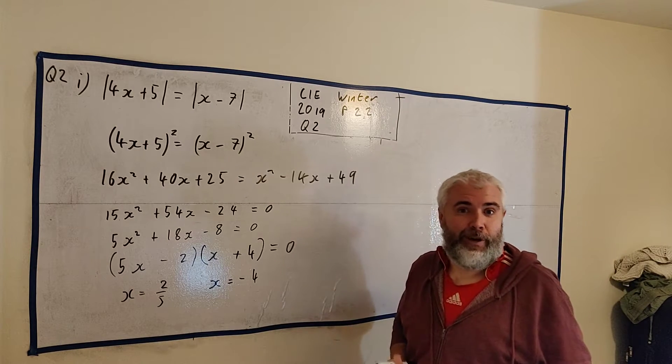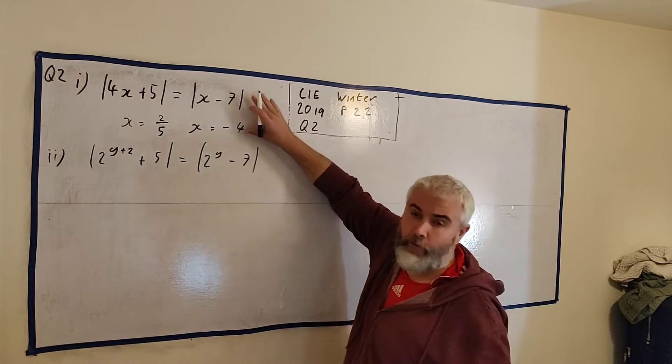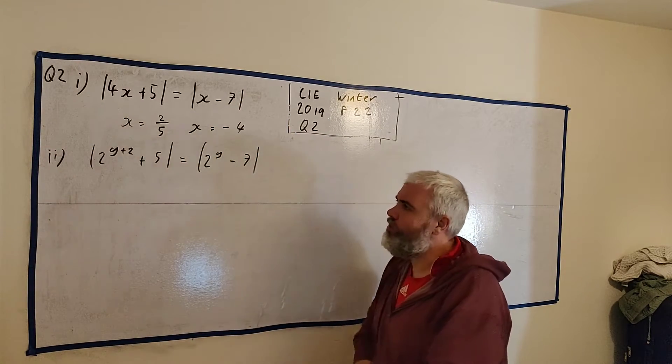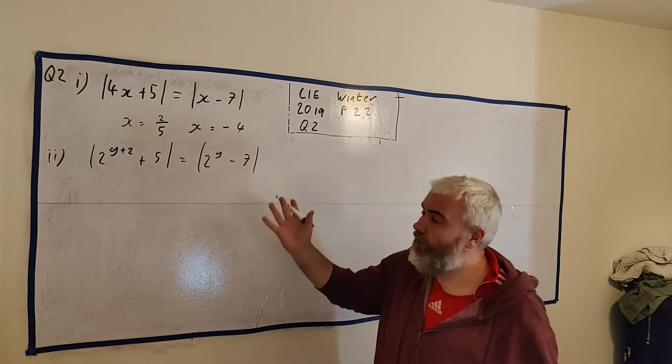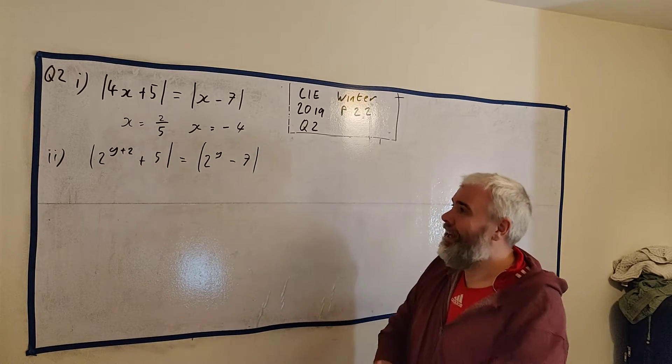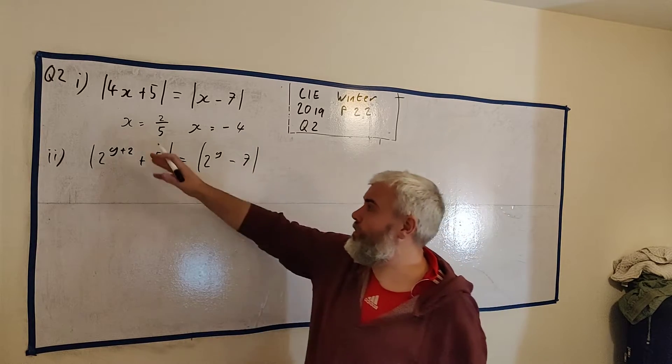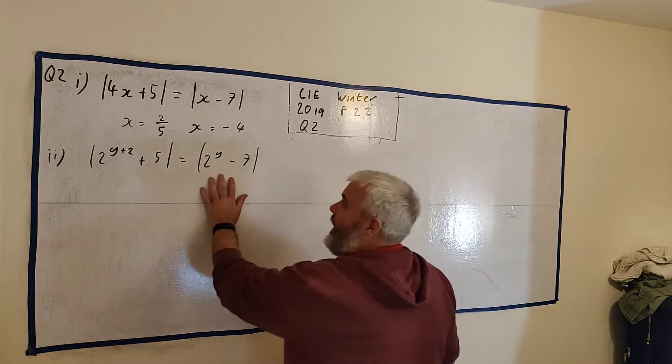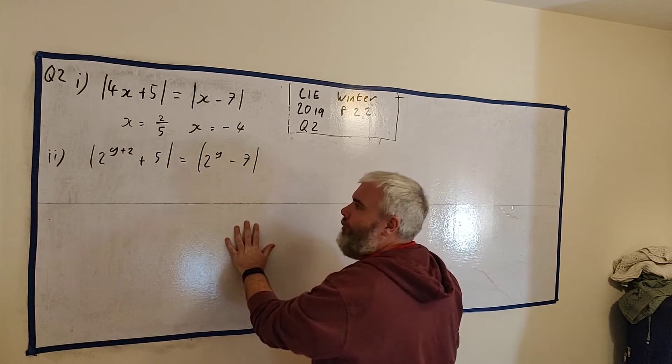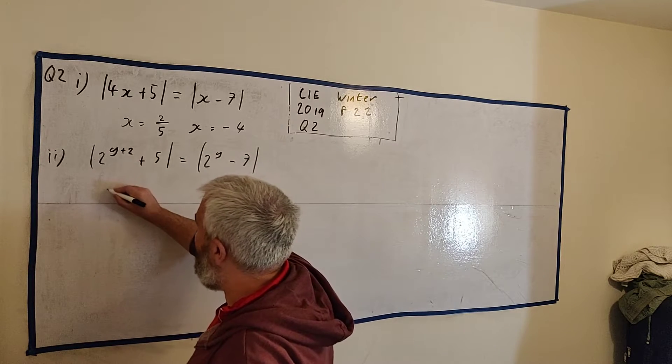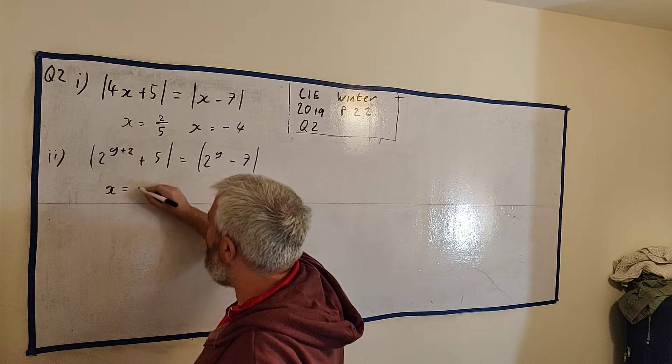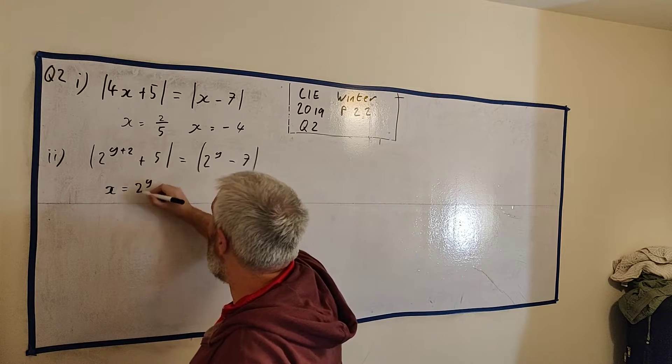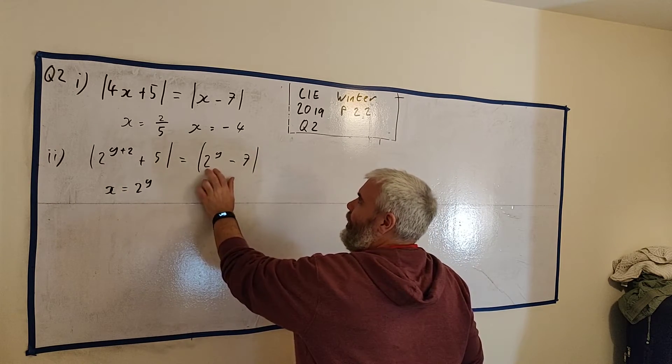Let me rub this out and we'll start in part 2. I actually left the answer from part 1 up here because we're going to use that. Because part 2 looks very difficult. We could do the same, a similar type of way. We could square both sides. But the thing is we've already done all the hard work. Because this looks a lot like this. And in fact, if we replace x to be equal to 2 to the power of y,